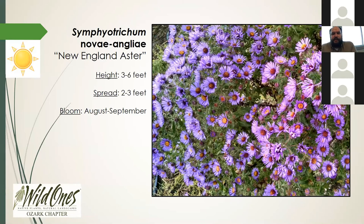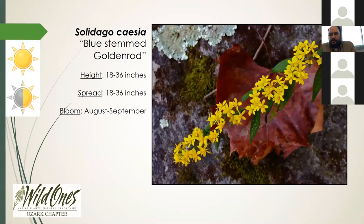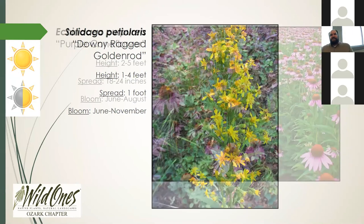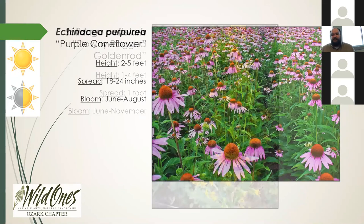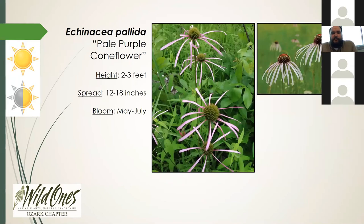Some goldenrods: Solidago is a great goldenrod that, like the asters, tends to bloom in the last part of summer — June through November. Bluestem goldenrod blooms October through September and can handle more shade than other goldenrods. Downy ragged goldenrod can get up to four feet tall, blooms June through November, and usually has a spread of about one foot — pretty cylindrical in shape. For Echinacea: purple coneflower gets up to five feet tall and blooms June through August. Pale purple coneflower blooms a little earlier — May through July — gets up to three feet, likes full sun, and can handle some part shade.